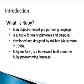Ruby is a dynamic, reflective, general-purpose, object-oriented programming language which is suitable for many platforms and purposes. It can be run on all the major operating systems and comes pre-installed on most modern flavors of Linux. Ruby originated in Japan during the mid-1990s and was initially developed and designed by Yukihiro Matsumoto.